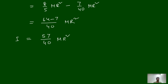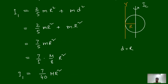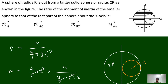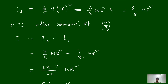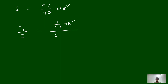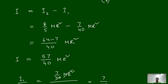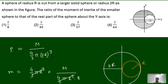They are asking the ratio of the smaller part to the rest of the part. The smaller part is I1 and the rest is I. So I1 divided by I equals (7/40)MR² divided by (57/40)MR², and after cancellation you get 7/57. The third option is the correct answer. Thank you for watching — please like, share, and subscribe.